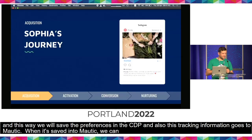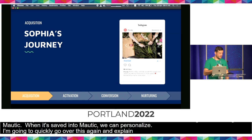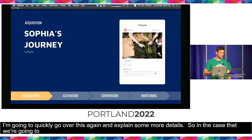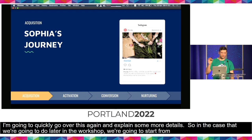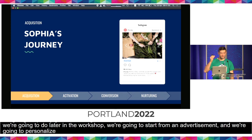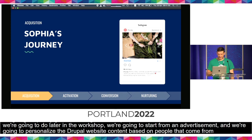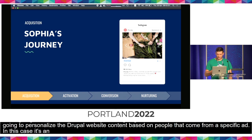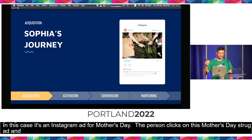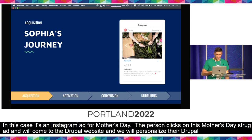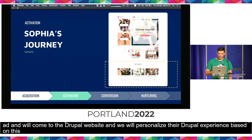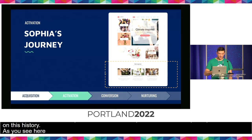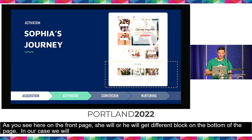I'm going to quickly go over this again and explain some more details. In the case we're going to do later in the workshop, we're going to start from an advertisement and personalize the Drupal website content based on people that come from a specific ad. In this case, it's an Instagram ad for Mother's Day, and the person clicks on this Mother's Day Instagram ad, comes to the Drupal website, and we will personalize the Drupal experience based on this story.